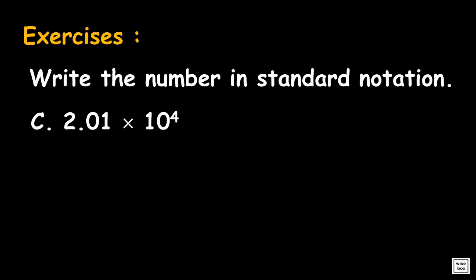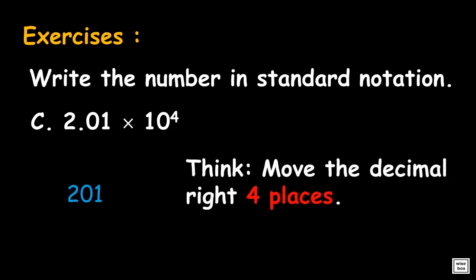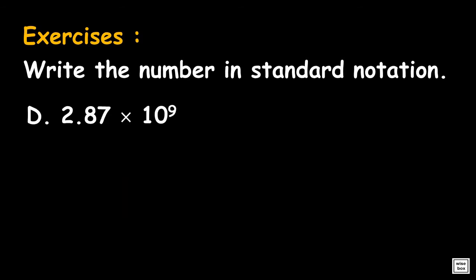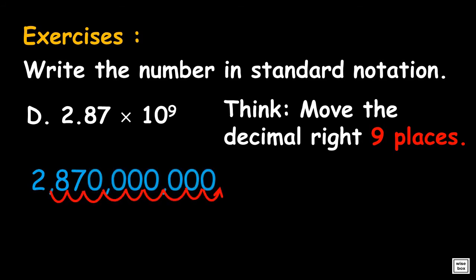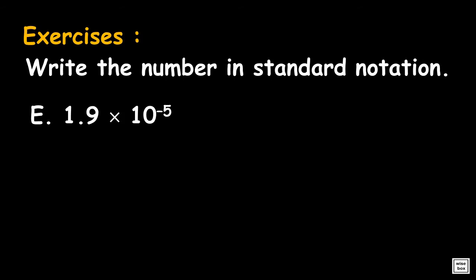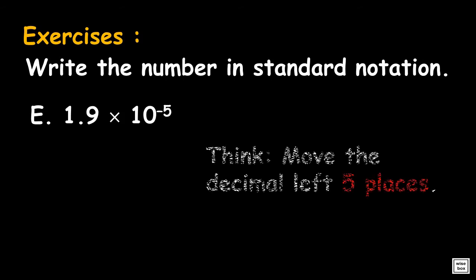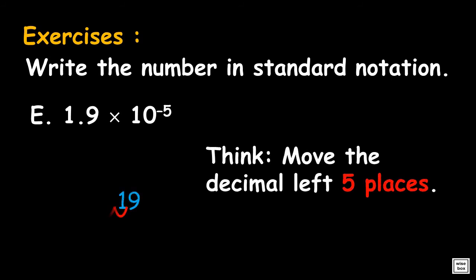Write 2.01 times 10 to the power 4 in standard decimal notation. Since the exponent is positive 4, move the decimal 4 places to the right. Answer is 20,100. Write 2.87 times 10 to the power 9 in standard decimal notation. Since the exponent is positive 9, move the decimal 9 places to the right. Answer is 2,870,000,000. Write 1.9 times 10 to the power minus 5 in standard decimal notation. Since the exponent is negative 5, move the decimal 5 places to the left. Answer is 0.0000019.